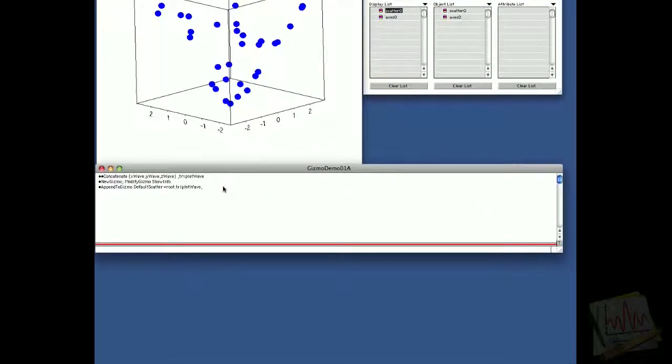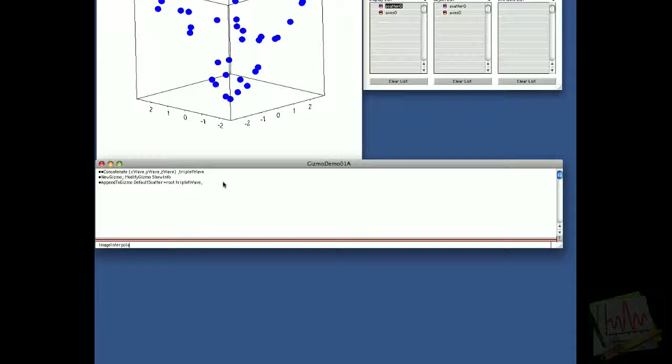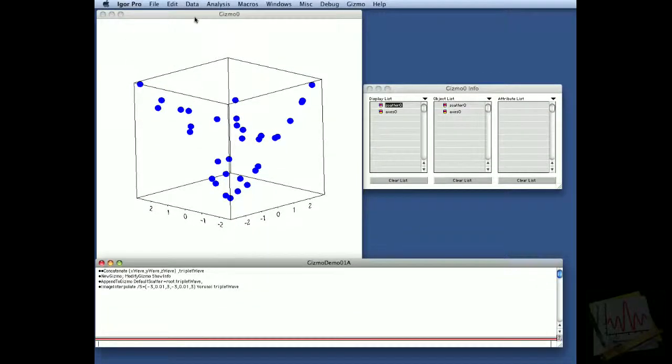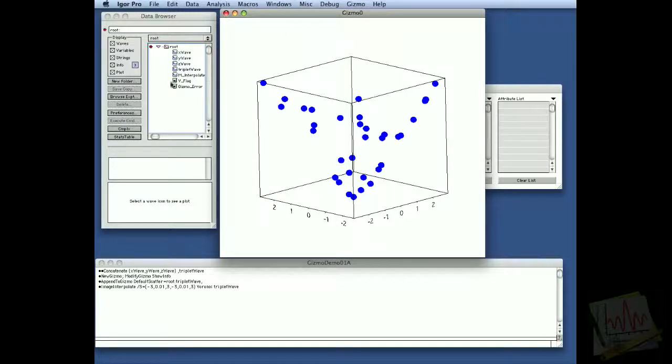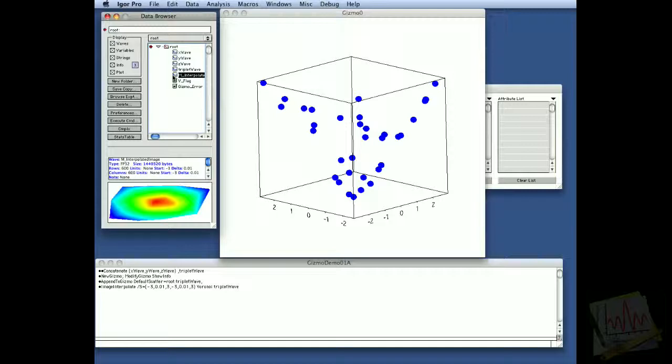So going to the command line, I'll invoke the image interpolate operation. I'll use the slash s flag, and now I'll use the minus 3 to 3 range, where the 0.01 is the resolution that I'm using. That's the resolution step. And again, minus 3 to 3 range in the y direction also. I'm going to call the Voronoi method of interpolation and pass it triplet wave as the source wave. It takes a few seconds to execute this, but now we have M underscore interpolated image as the result of the interpolation.